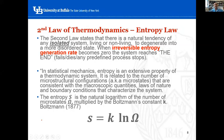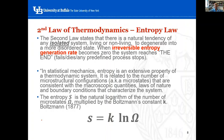When irreversible entropy generation rate becomes zero, the system reaches the end because it can no longer generate entropy. This can be defined as failure, dying, or a predefined process ending. In statistical mechanics, entropy is an extensive property related to the number of microstructural configurations — or microstates — consistent with the microscopic quantities, laws of nature, and boundary conditions that characterize the system.